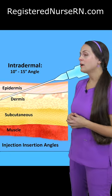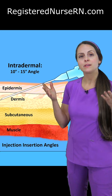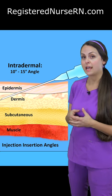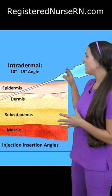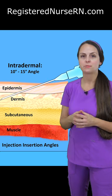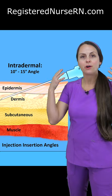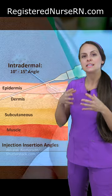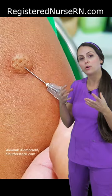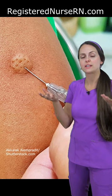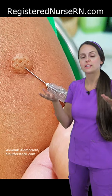With intradermal, you want to go in anywhere between a 10 to 15-degree angle. We're targeting the dermis, just below the epidermis. You know you got a really good intradermal injection when you see a wheal or bleb on the skin, which looks like a small bubble.